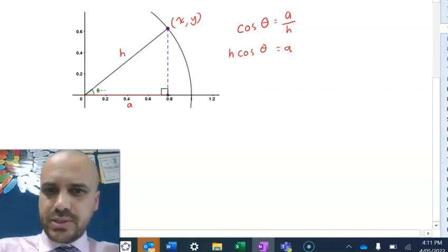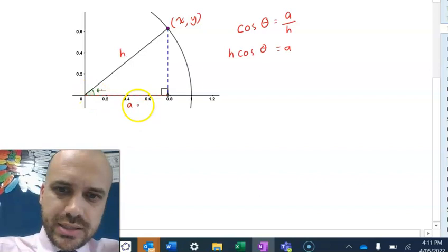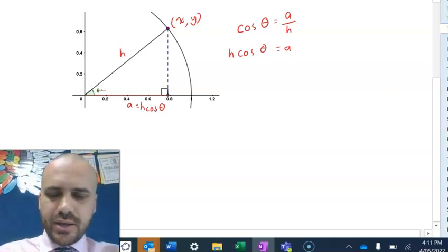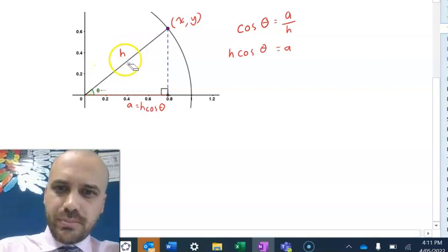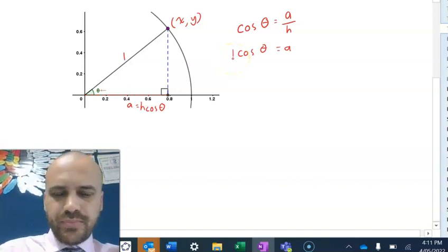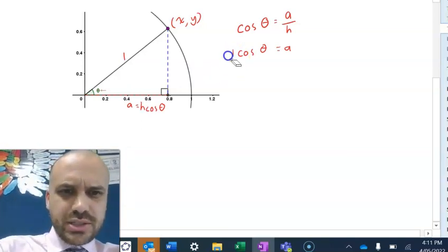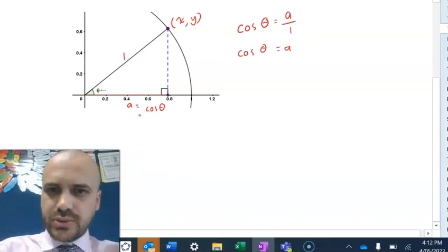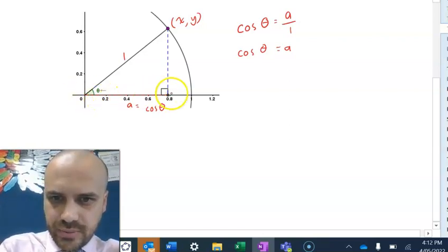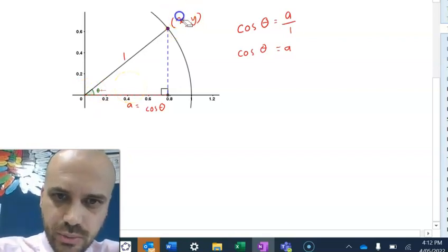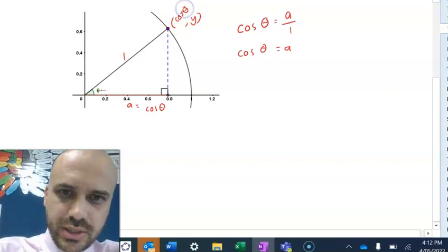But we can go one better than that. Because this is a unit circle with a radius of one. That means the hypotenuse equals the number one. Which means our h value equals the number one. And one cos theta is just cos theta. So that means the adjacent side equals cos theta. This length here, this red length is equal to cos theta. Which means that this x coordinate equals cos theta. That's really cool.